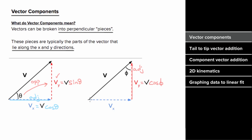And since the horizontal component is now opposite to this angle, we'd write the horizontal component as the magnitude of the total vector times sine of this angle. So remember: to find the opposite side, you use sine, and to find the adjacent side, you use cosine.